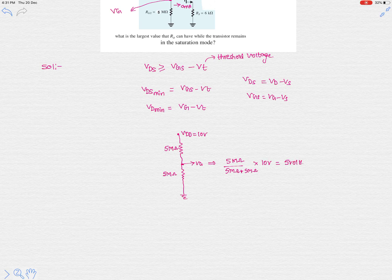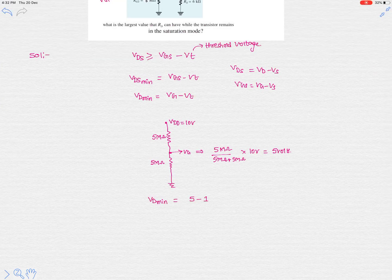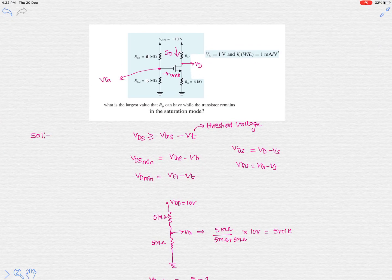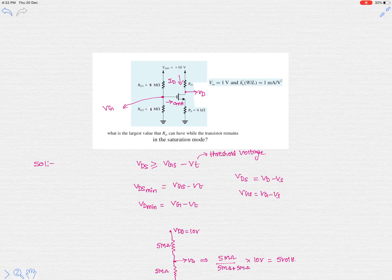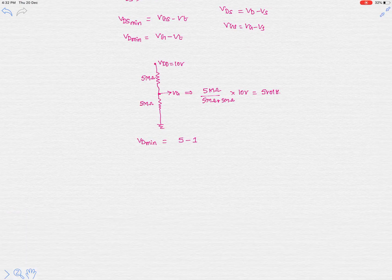Now, VD_min — the minimum drain voltage — is VG minus VT, which is 5 volts minus 1 volt, giving VD_min equals 4 volts.